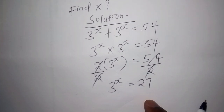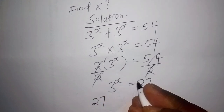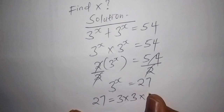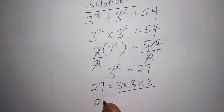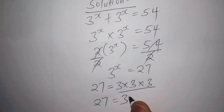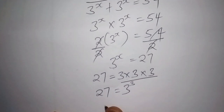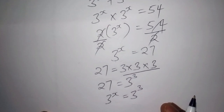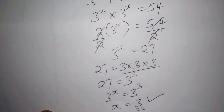Once we get three to the power of x equals 27, we need to change 27 to the base of three. Three times three is nine, and nine times three is 27, so 27 equals three to the power of three. Now we have three to the power of x equals three to the power of three, so we pick the powers: x equals three.